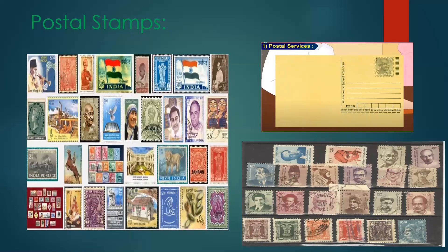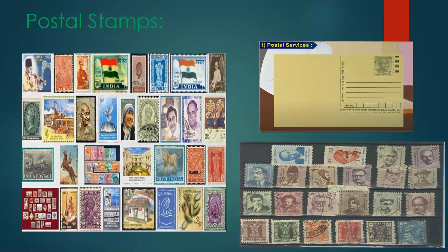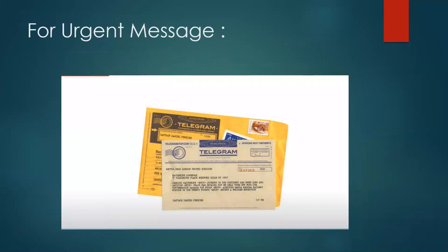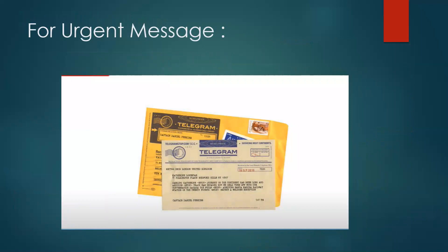There was also another facility — that was the telegraph. It was a very short message system, and the telegraph was the earliest means of electrical communication. It was invented by Samuel Morse in 1840 — it is called the electric telegraph. Afterwards, the internet, email and smartphones came and replaced it.